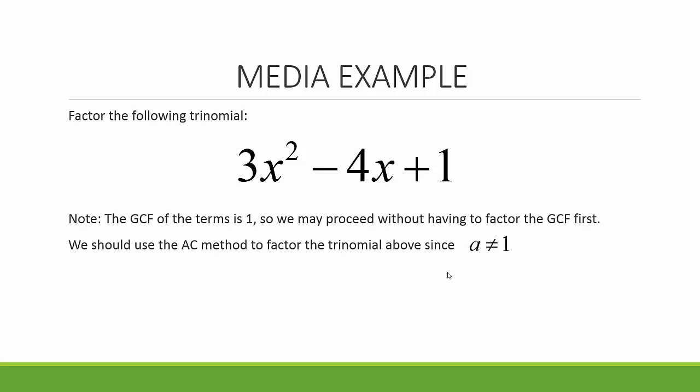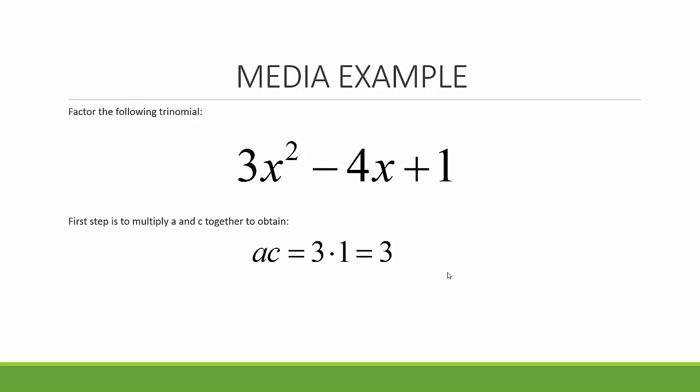First we notice that the GCF of all the terms is 1, so we may proceed without having to factor the GCF first. We use the AC method to factor the trinomial above since a is not 1. The first step is to multiply a and c together. So a times c is 3 times 1, which is 3.